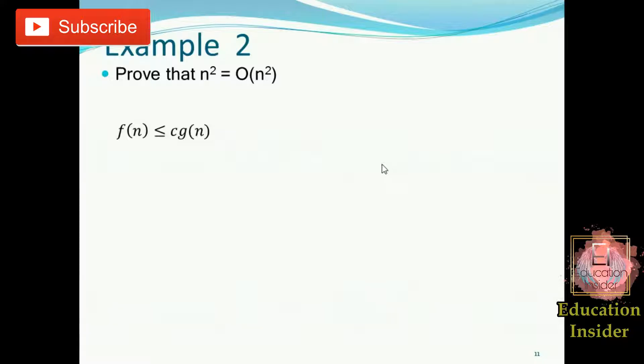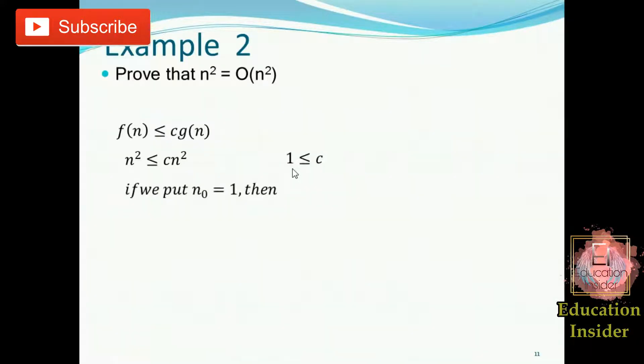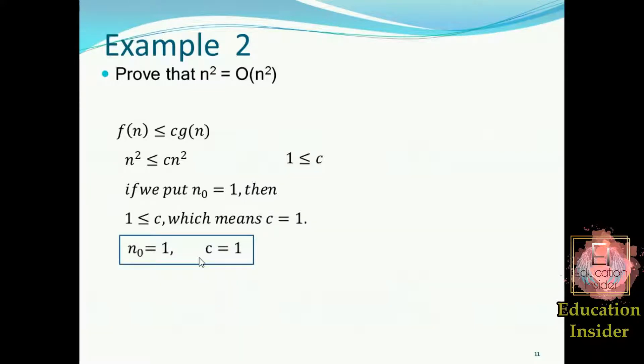Let's move to example number two. We need to prove that n² is the upper bound of n². First, we use this inequality to prove it. After populating f(n) and g(n), we do some algebra — after canceling n² by dividing n² on both sides, we get the value of c as 1. So if we put n₀ equal to 1, we get c equal to 1, and hence this example is proved.